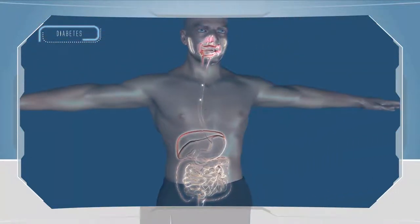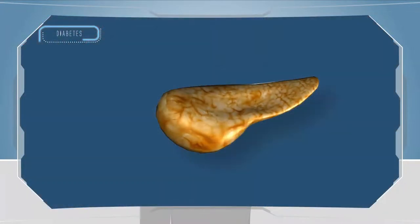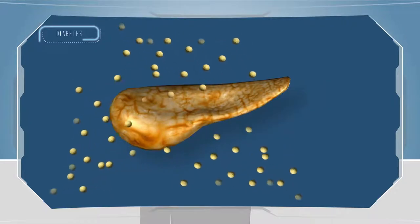The pancreas, an organ that lies near the stomach, makes a hormone called insulin. Insulin helps glucose from food get into body cells to be used for energy.